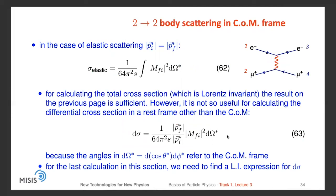In the case of elastic scattering, the initial momenta equal the final momenta, and the expression for the cross-section simplifies even further. To calculate the total cross-section, which is Lorentz invariant, this result is sufficient. But it is not useful for calculating the differential cross-section in a frame other than the center-of-mass frame. The differential cross-section is expressed in terms of dΩ*, where the angle Ω* refers to the center-of-mass frame.